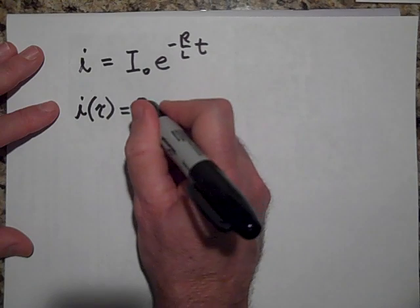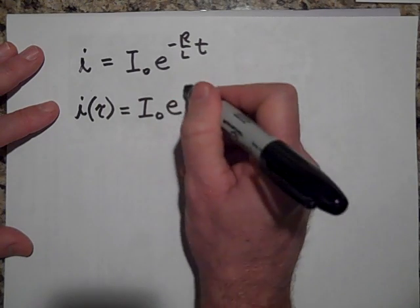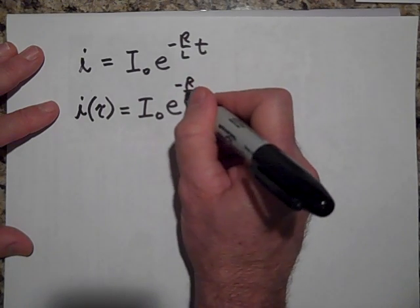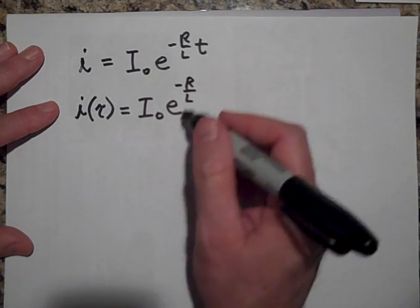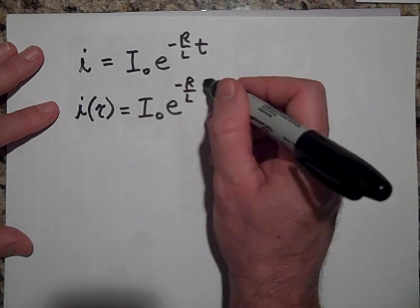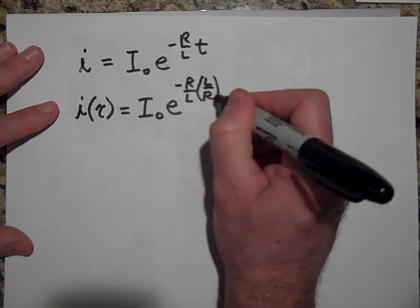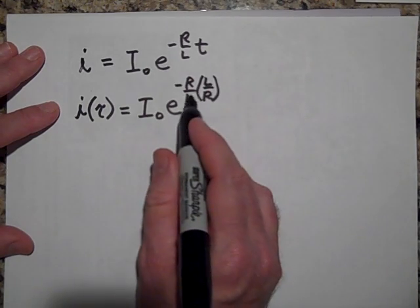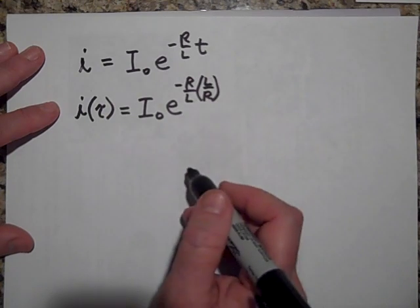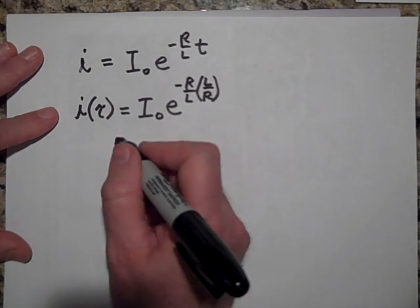So if I put in, after one time constant, the I after one time constant, if it equals I₀ times e to the negative R over L, and for T I'm going to put in the time constant, which is L over R, see how that works out.